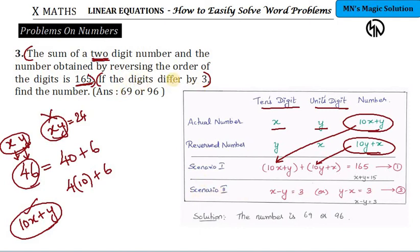For the second scenario, digits differ by 3. It could be either X minus Y or Y minus X, because we don't know which digit is larger. Let's assume X minus Y equals 3. If when solving this gives a negative answer, then that equation is wrong, because a digit can never be negative. Digits should always be positive values in a two-digit number. When you solve these equations, you get the answer as 69 or 96.